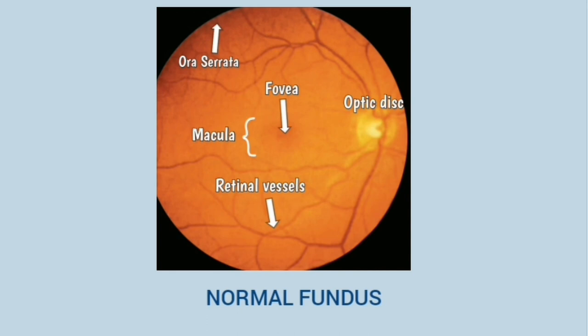The optic disc is present on the right side, so this is the fundus image of the right eye. The optic disc is on the nasal side and represents the beginning of the optic nerve. The macula is temporal to it, and the central depressed area is the fovea — the most sensitive part of the retina, as it contains cones. You can also see the retinal vessels, and the ora serrata is the surrounding rim of the fundus.